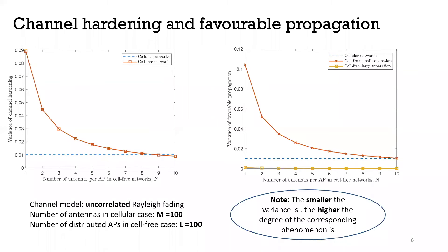Except when two users are quite separated in cell-free, because in that scenario these two users will be served by a very different set of APs. But still, universally in cell-free the degree of favorable propagation is not so obvious as in the cellular case. That's why the widely adopted maximum ratio scheme cannot be used in cell-free, as it would highly underestimate the performance of the system. Instead, we need to turn to interference-suppressing schemes like MMSE and zero-forcing-based schemes.